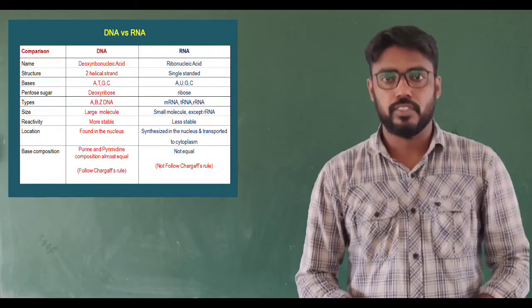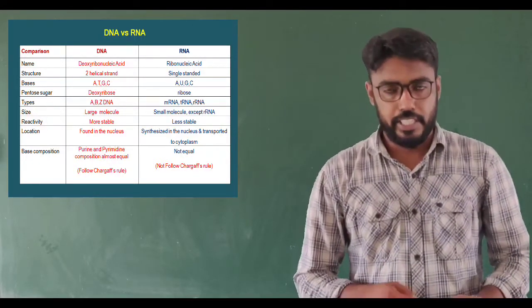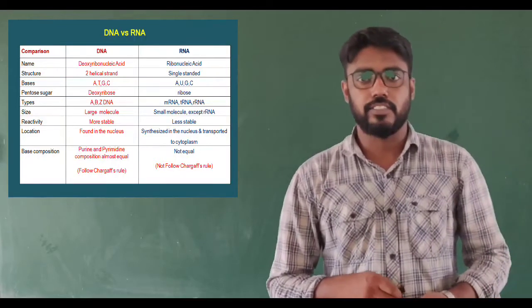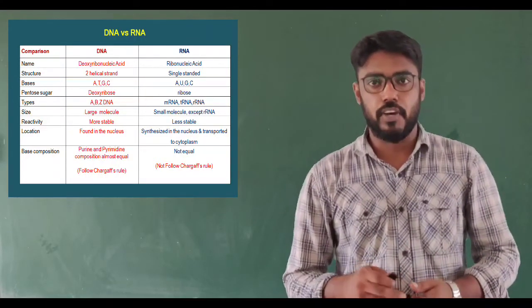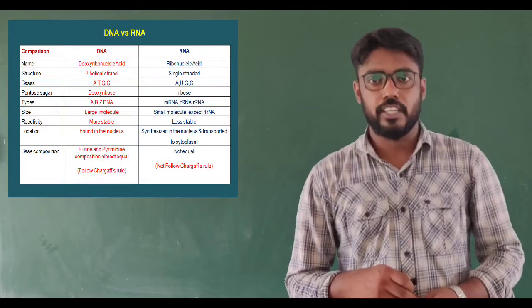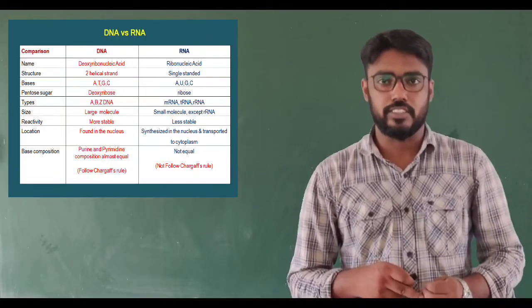DNA and RNA have different types. DNA types include B-DNA and Z-DNA. In the case of RNA, there are mainly rRNA, mRNA, and tRNA.